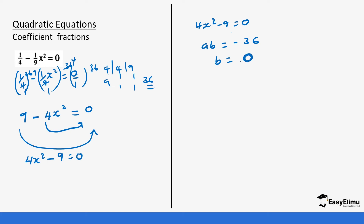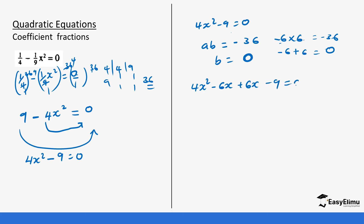We need two numbers such that if you multiply them you get negative 36, and if you add them you get 0. Those numbers are negative 6 and 6. Negative 6 times 6 gives negative 36, and negative 6 plus 6 gives 0. So we split the middle term: 4x² minus 6x plus 6x minus 9 equals zero.